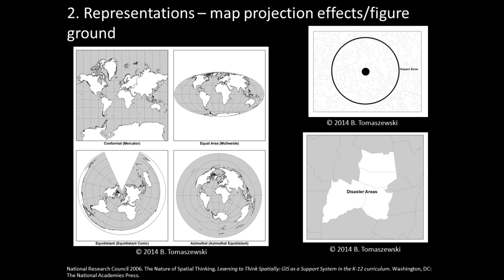Note in these images how the use of black and white can be shifted to change the representation of figure and ground relationships. For example, black is used to show the impact zone figure in the top image, and white is used to show the disaster area in the bottom image.